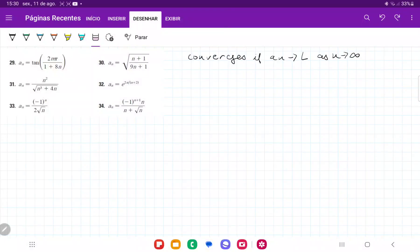So for number 31, we want to see if a_n here, if it converges. And now a_n converges if the value of n*a_n tends to a specific limit as n approaches infinity.